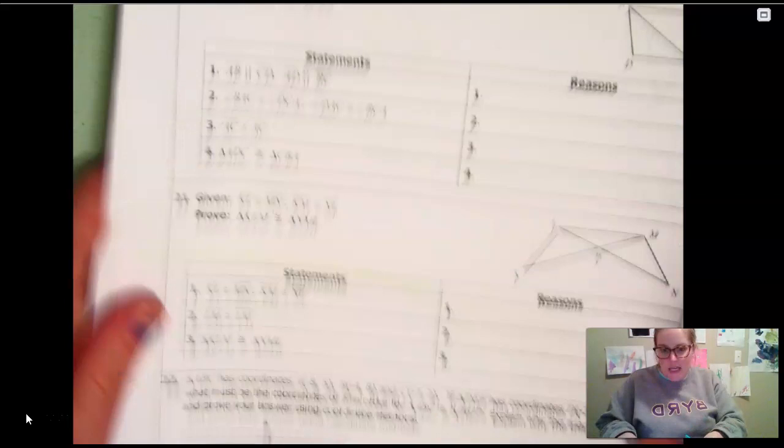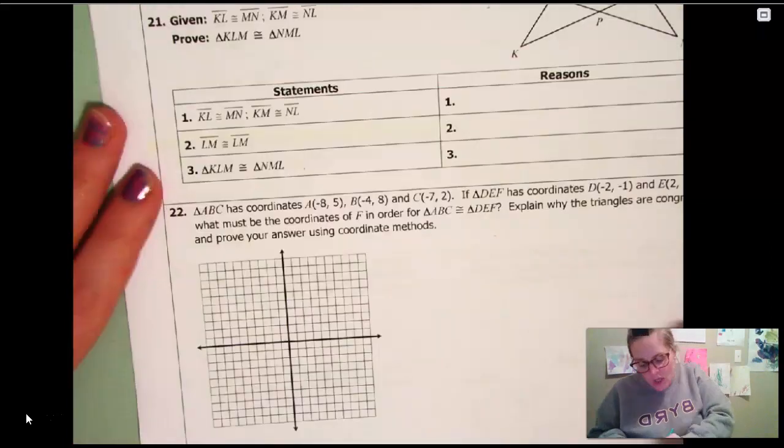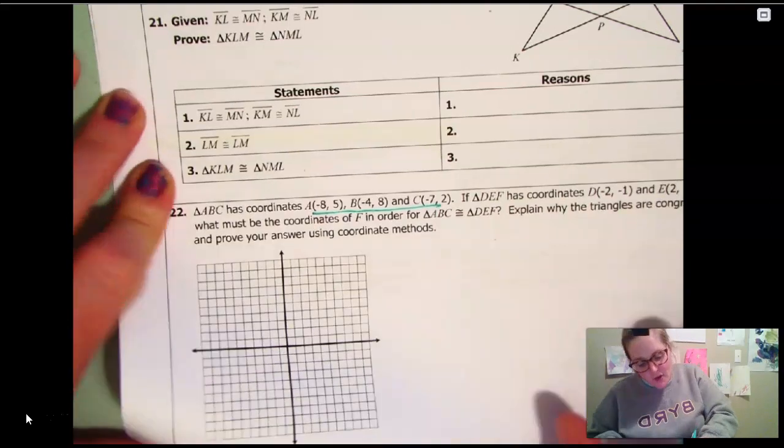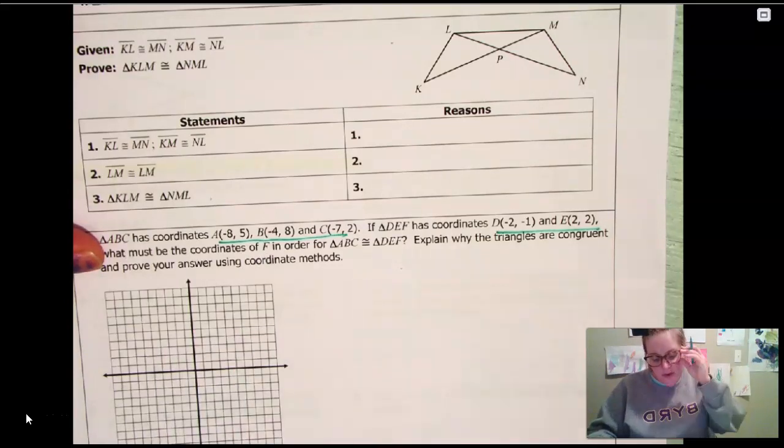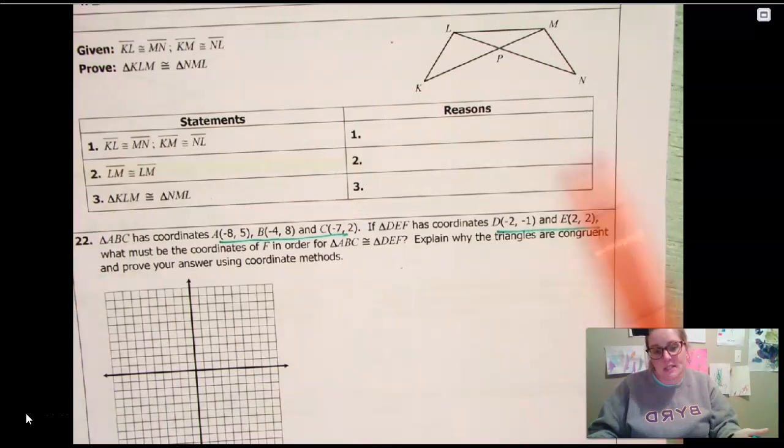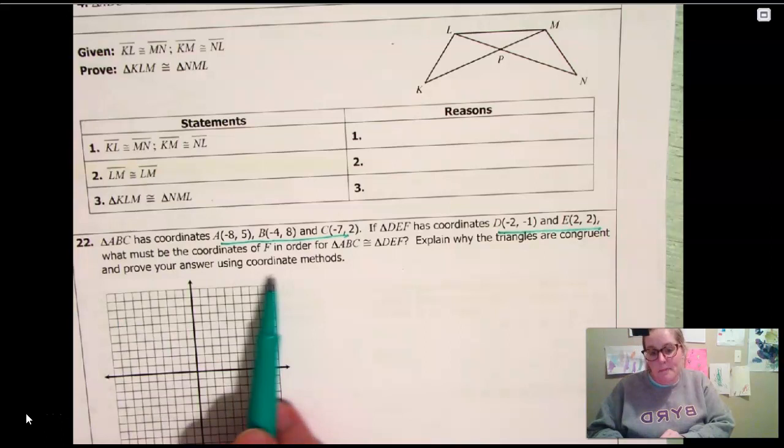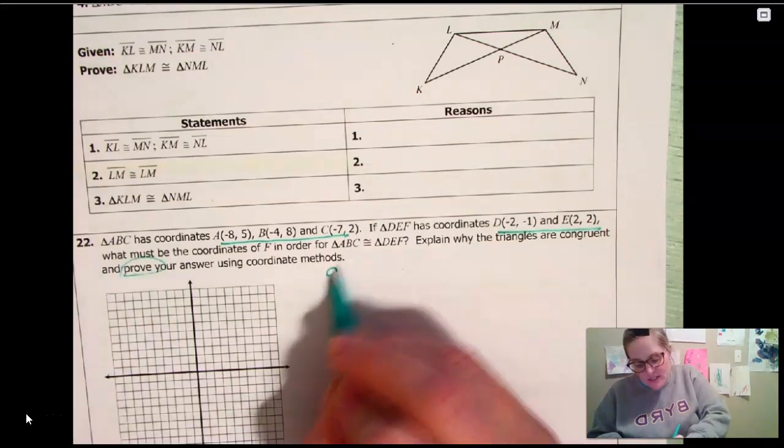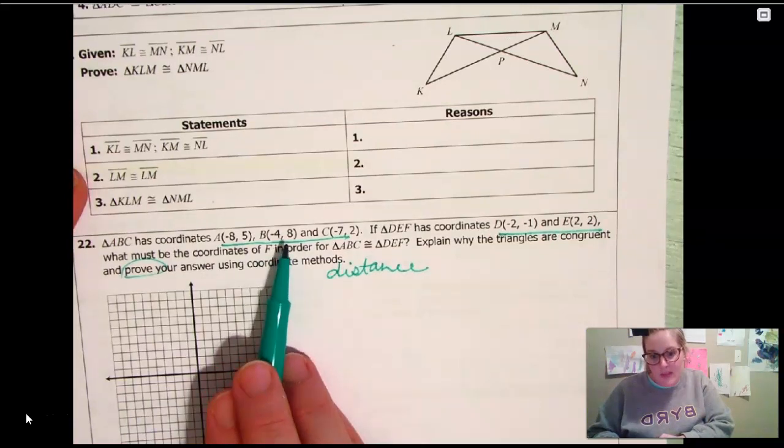Let's see what's left. I think the rest of it, the rest of it goes right along with that. And then these are proofs. Again, I've listed out the only reasons that you can use, so that should be a little bit easier. And then for this very last one, number 22, you need to plot A, B, and C. And then you need to plot D, E. If you have the coordinates for D, E, what must be the coordinate for F? So you've got to find that coordinate F. Use the grid to help you find that. You can also use the distance formula because it says explain why the triangles are congruent and prove your answer using coordinate methods. If you're going to prove that, then you need to know the distance in between each of those. So you would have to find the distance between A, B, and compare that to D, E.